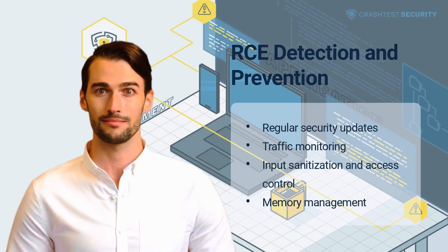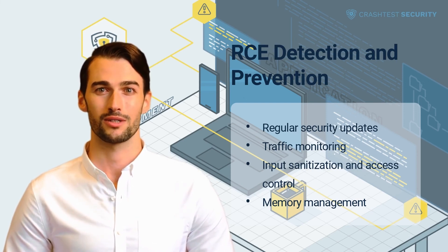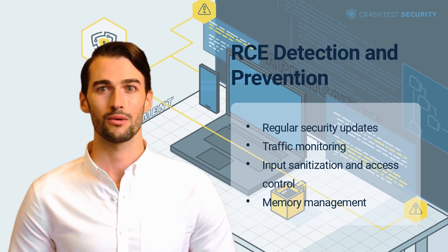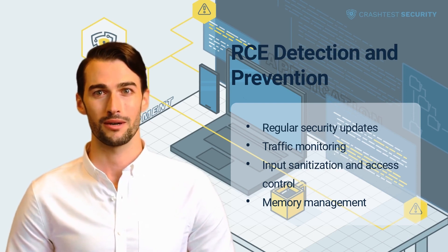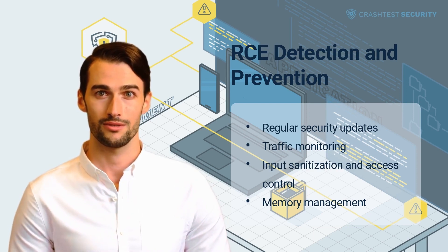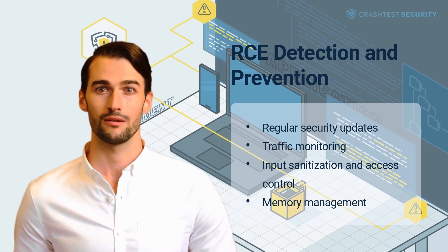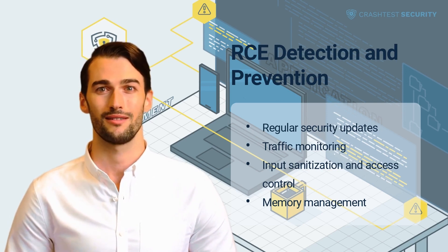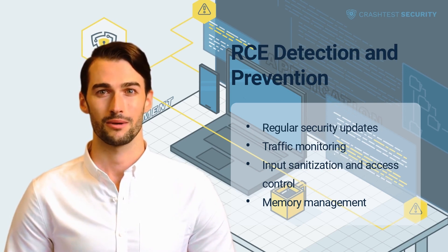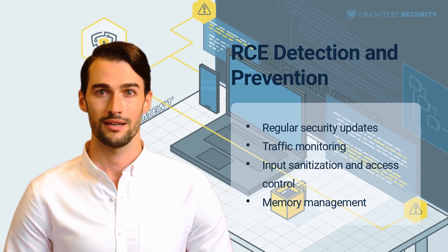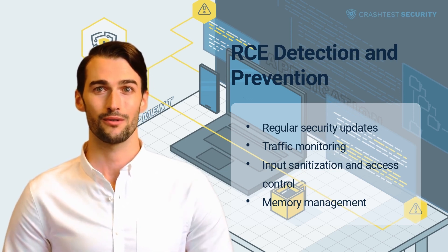Memory management: implement buffer overflow protection and other forms of memory management to avoid giving rise to vulnerabilities that are easy to exploit. Such protection will, for example, terminate the execution of a program when a buffer overflows, effectively disabling the possibility for malicious code to be executed. Bounds checking and tagging are other protection techniques that can be implemented to stop buffer overflow.